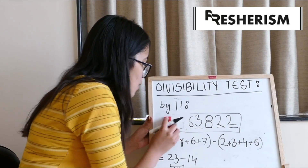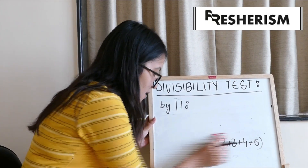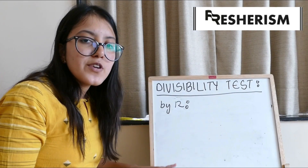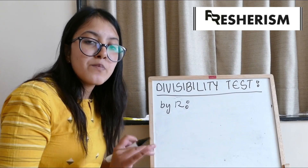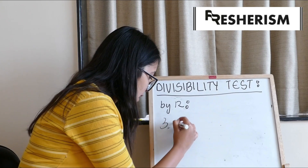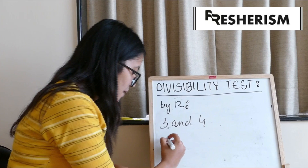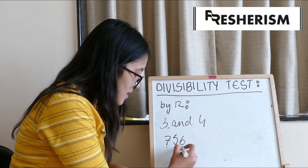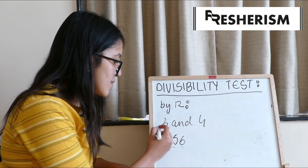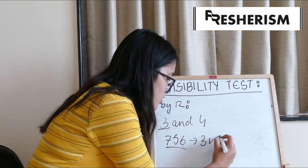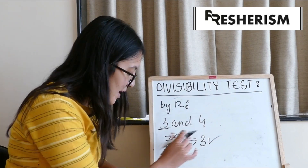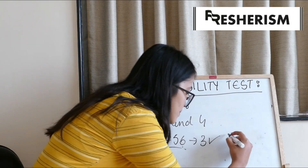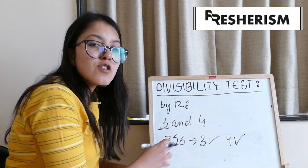Last divisibility test, guys, which is the test by 12. For any number to be completely divisible by 12, it has to be divisible by both 3 and 4. For example: 756. Divisibility test of 3: 7 plus 5 plus 6 equals 18, and 18 is divisible by 3 — check. Is 56 divisible by 4? Yes, it is. Hence, 756 is divisible by 4 — check. Hence, 756 is also divisible by 12.